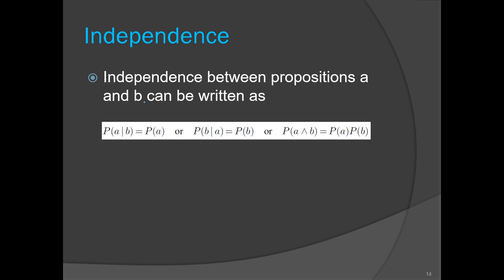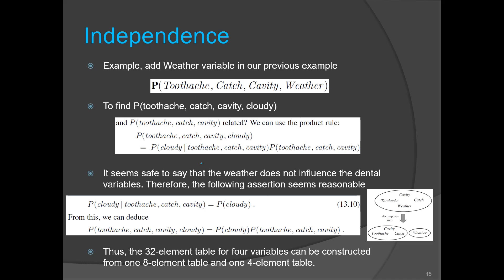Next is the concept of independence. If two events A and B are independent, then the conditional probability of A given B equals probability of A alone, because B does not affect A. This changes the product rule formula for independent events. For an example, consider adding the weather variable to our previous three-variable example. Weather has four values, so eight times four gives 32 possible worlds.